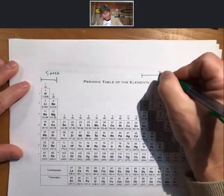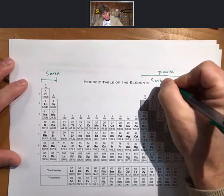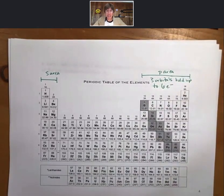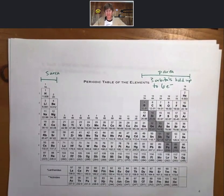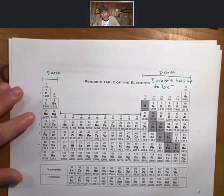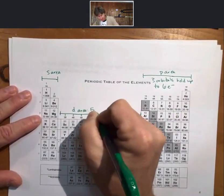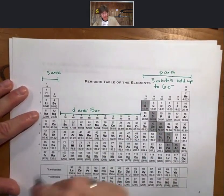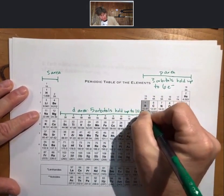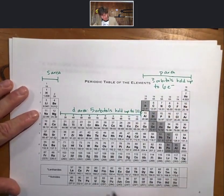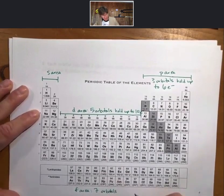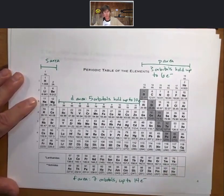This is the p area, so three orbitals, will hold up to six electrons, and that's why the p area is six elements wide. Then, with ten elements wide, that's going to be the d area. Five orbitals hold up to ten electrons. And 14, this is going to be the f area. Seven orbitals. Up to 14 electrons.